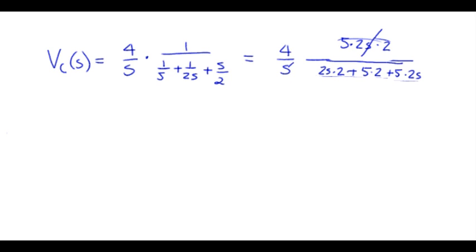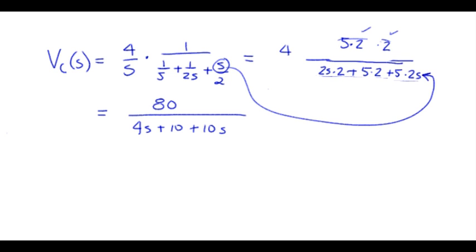So S's cancel out, leaving us with 4 times 5 is 20, 40, 80. Over 4S plus 10, plus 10S. And I can see that I forgot this when I was collecting my terms. That was supposed to be an S squared.